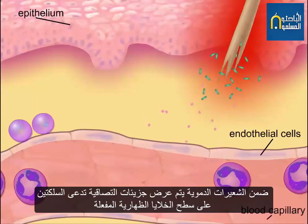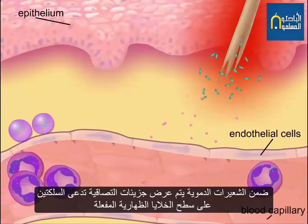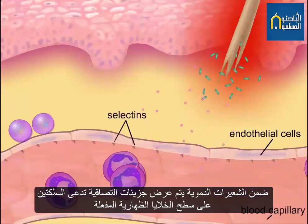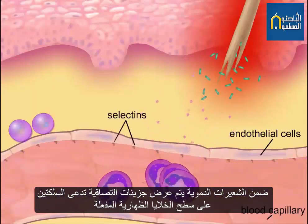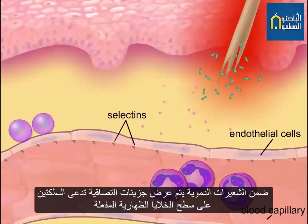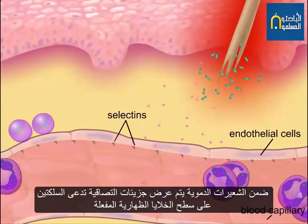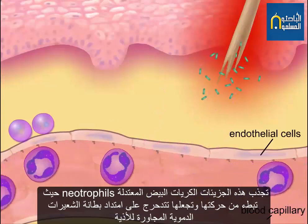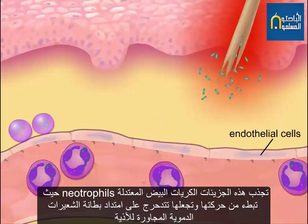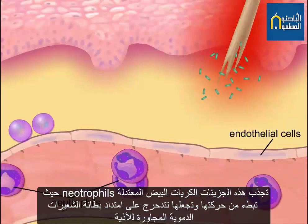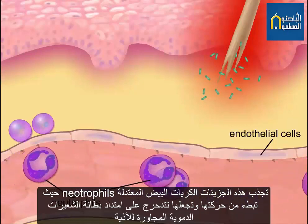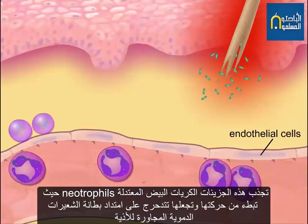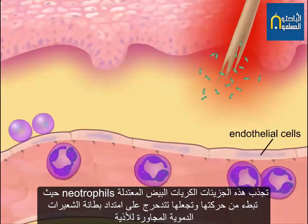Within the capillaries, adhesion molecules called selectins are displayed on the activated endothelial cells. These adhesion molecules attract neutrophils, slow them down, and cause the neutrophils to roll along the endothelium.